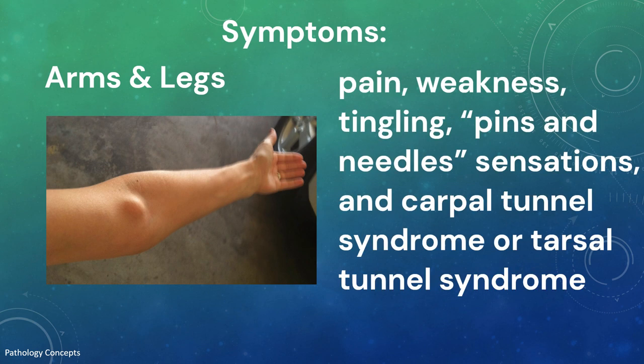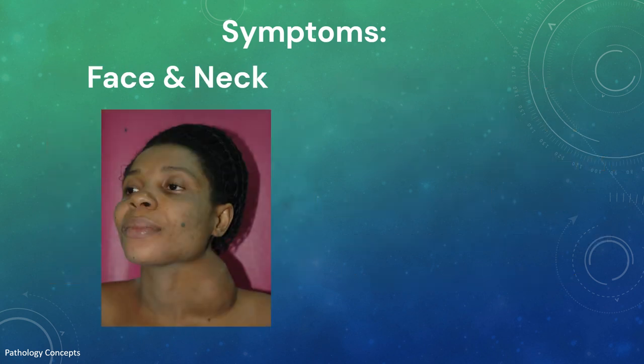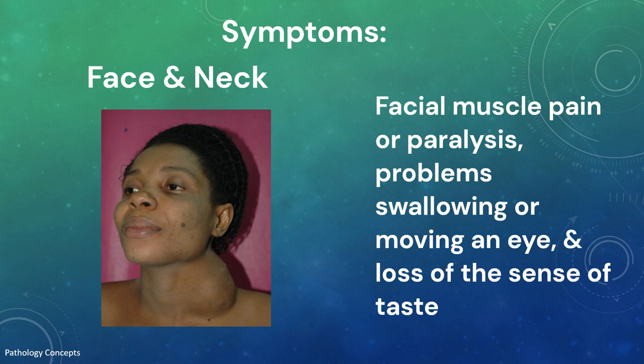Schwannomas that grow on a nerve in the arm or leg can cause pain, weakness, tingling, pins and needle sensation, and carpal tunnel syndrome or tarsal tunnel syndrome. Schwannomas can also affect nerves in the face and neck, which can cause facial muscle pain or paralysis, problems in swallowing or moving an eye.